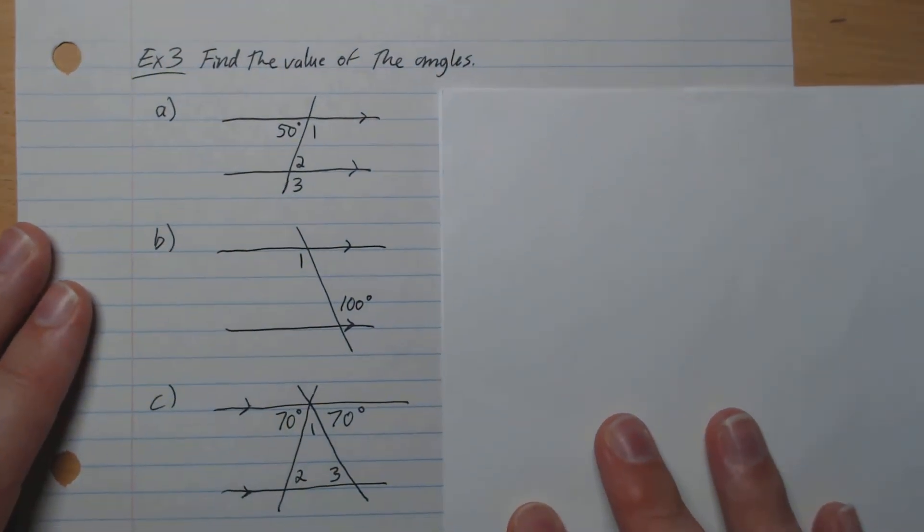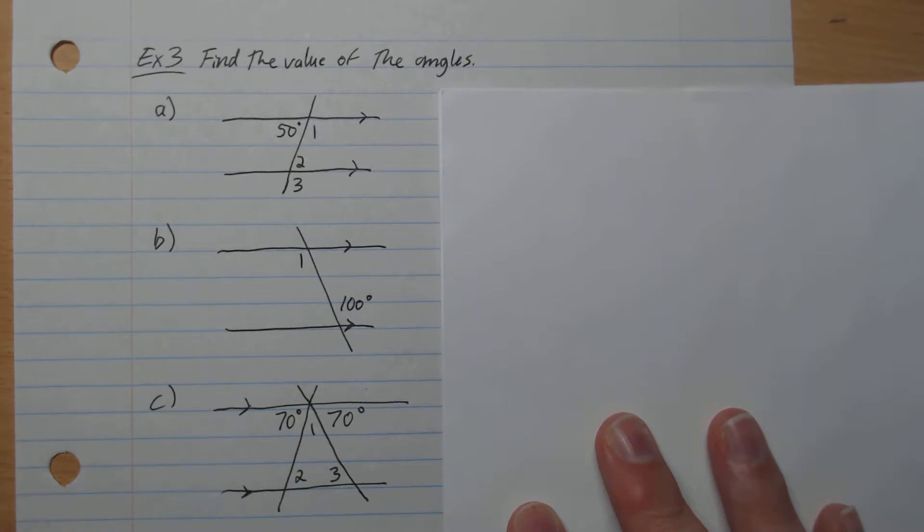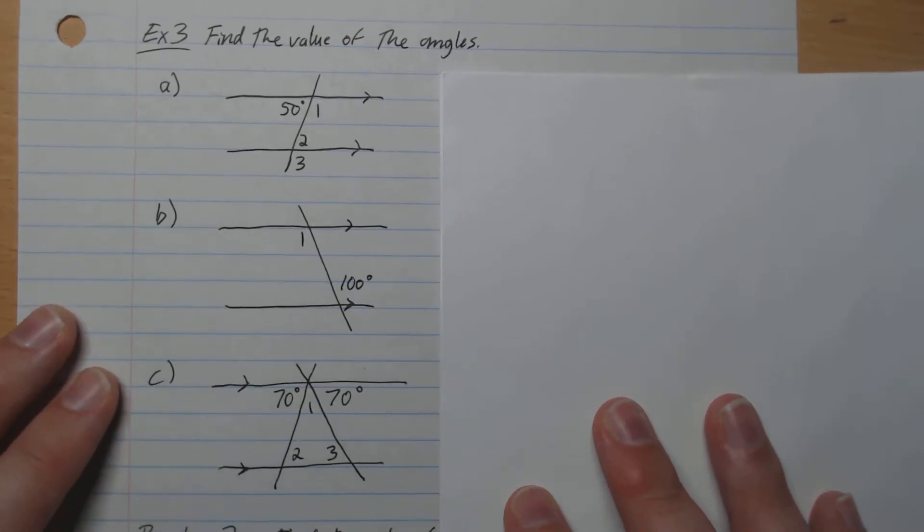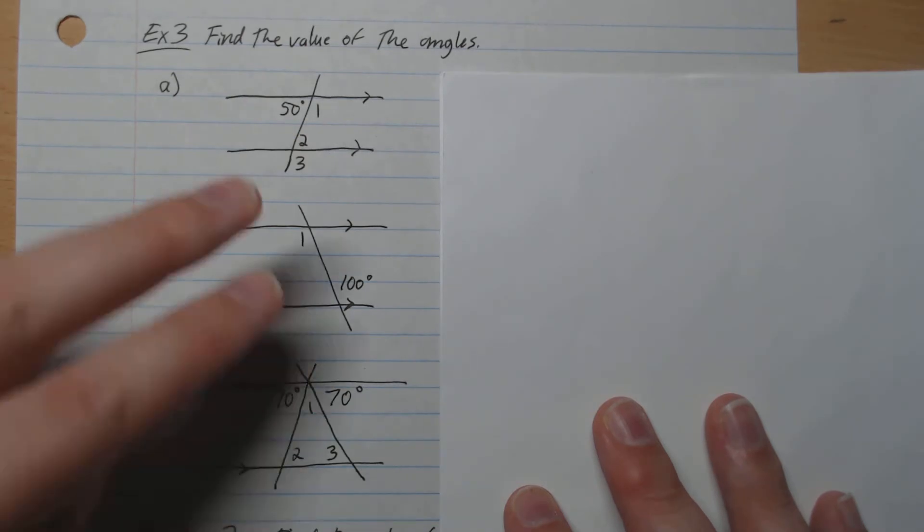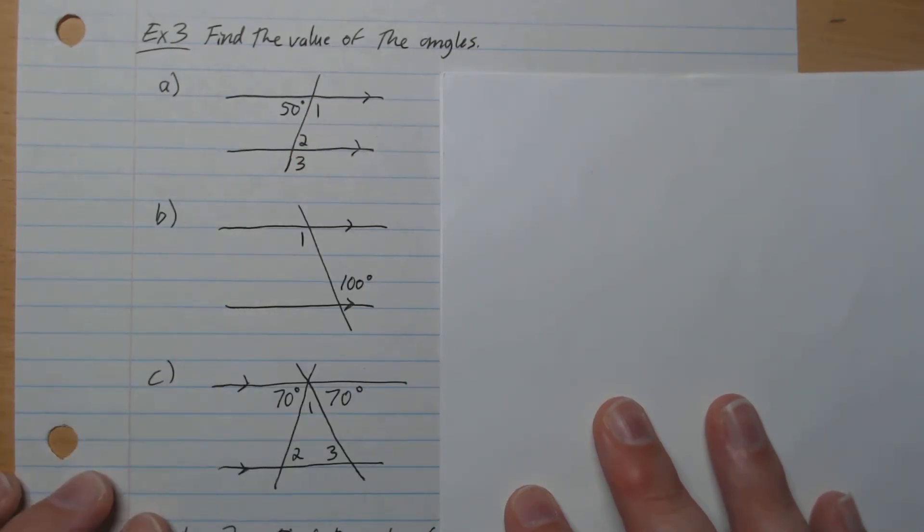We're going to find the value of angles using the properties that we just saw earlier. So here 50 is given. We have two parallel lines like that. 1, 2, 3. What are those values?